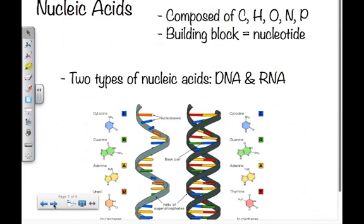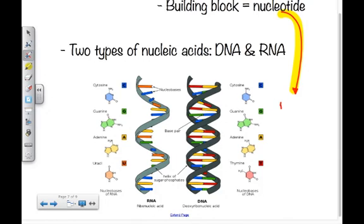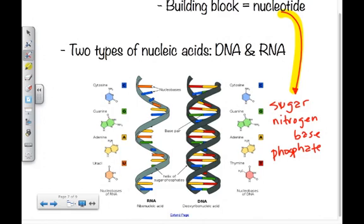Our last group is the nucleic acids. These are composed of carbon, hydrogen, oxygen, nitrogen, and phosphorus. Their building block is the nucleotide. Nucleotides are composed of three separate structures: a sugar group similar to a glucose molecule, a nitrogen base, and a phosphate group — where phosphorus bonds with oxygen to form phosphate.